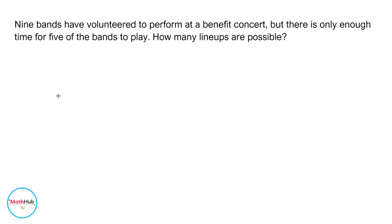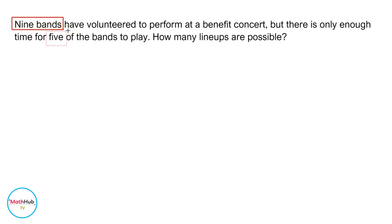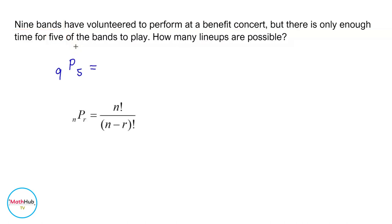There is only enough time for five of the bands to play. How many different lineups are possible? Because we are lining them up and arranging the bands, this is a problem on permutation. We have nine bands to choose from and only five can play, so therefore this is nine permutation taken five.